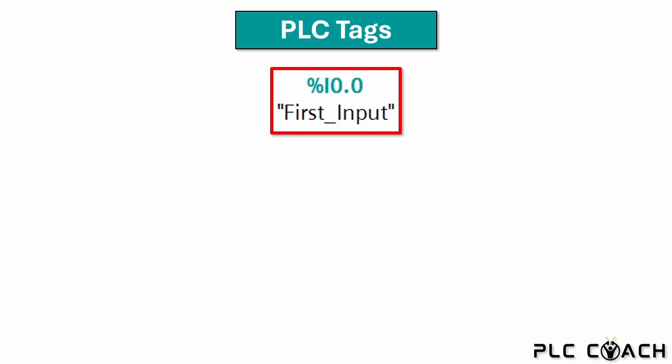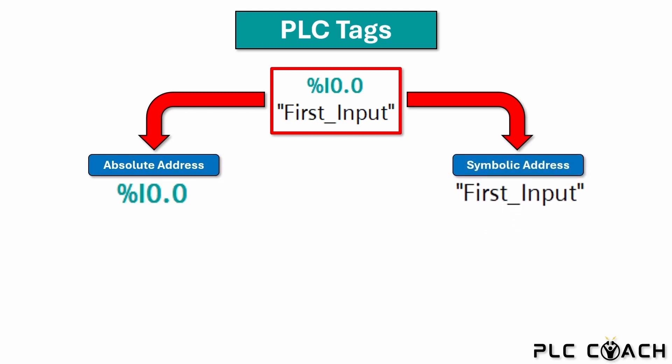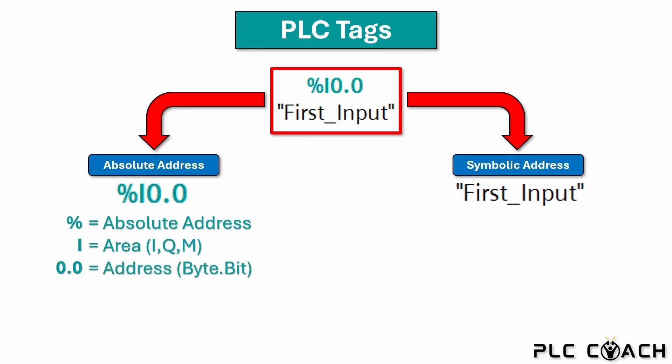A PLC tag consists of two addresses: an absolute address and a symbolic address. In the TIA portal, absolute addresses are marked with a percentage sign. These addresses refer to a physical area such as inputs, outputs, or internal memory. In our case, the input has the absolute address %I0.0.